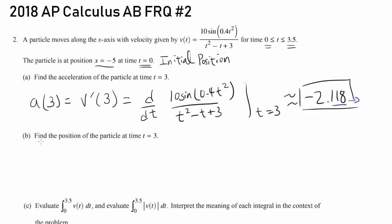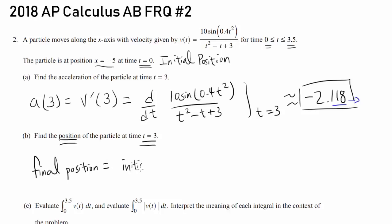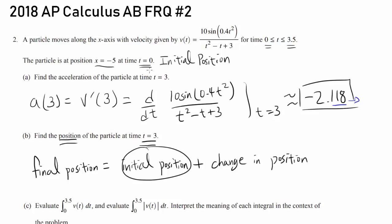Let's go on to Part B: find the position of the particle at time t equals 3. You're starting at time 0 and stopping at time 3, and you want the final position. The final position equals the initial position plus the change in position. We know the initial position is negative 5 — they gave it to us.